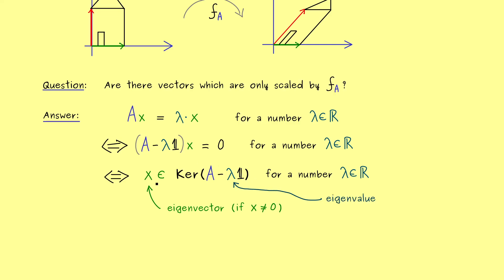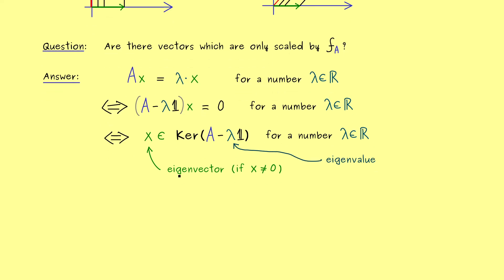However, we don't do that for the scaling factors we now call eigenvalues. So you see, eigenvector and eigenvalue always come together. Moreover, you also see, if you find one eigenvector, you immediately have infinitely many. Simply because the kernel is always a whole subspace.